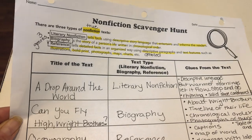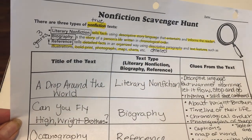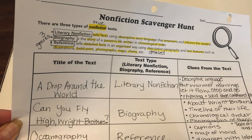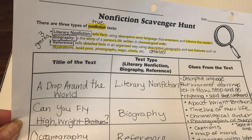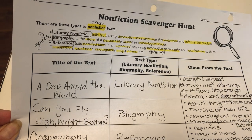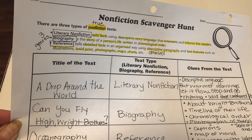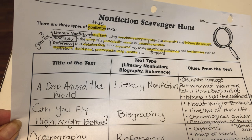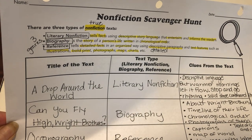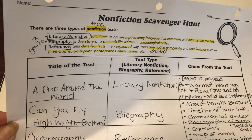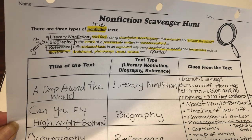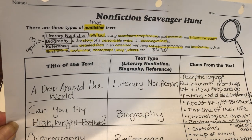I'm going to quickly go through each of the three books that Miss Todd read and discuss the genre and why. So the first book, 'A Drop Around the World,' was a really cool book with great illustrations — you had to find the drop on each page. That is literary nonfiction because it gives you true facts about the water cycle, but you're also going on a story with that drop of water, so there's a storyline as well. It has descriptive language — for example, 'but warmer mornings, it let it flow, stop and go' — it even has some rhyming. It tells how a liquid can go from a solid state to a gas state, which is where that nonfiction informational piece comes in.